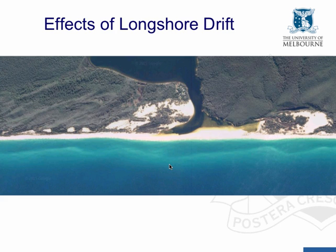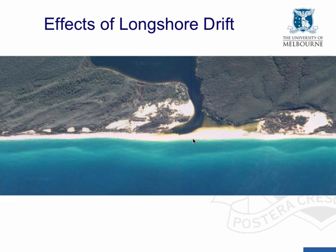This photo shows a barrier estuary where longshore drift occurs from left to right. It's an estuary at the mouth of the Cairn River in East Gippsland, along the roughly 90-mile beach coastline. The strong longshore drift along this coastline has shifted so much sand that it has completely blocked the entrance to the river — a relatively low-flowing river in summer — forming a barrier between the river and the coastline.